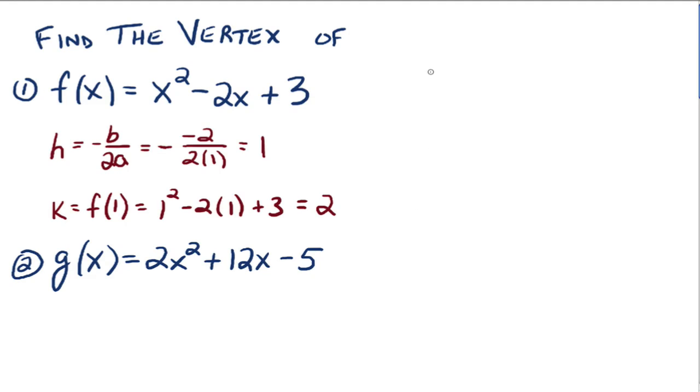So the vertex would be (1, 2). And as soon as we know that, we can find the axis of symmetry. Because which way does this parabola open? Up or down? Right? It opens up because the coefficient of x squared out here is positive. So the axis of symmetry is a vertical line, which would be x equals the x part of the vertex. Everybody see how that works?